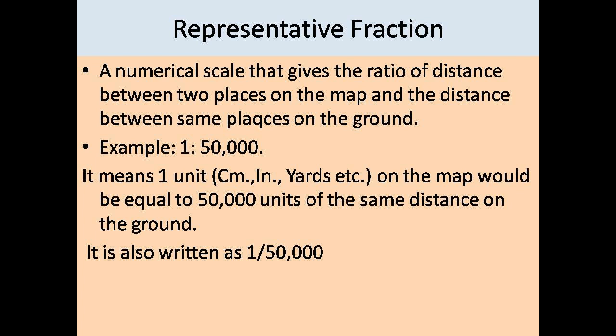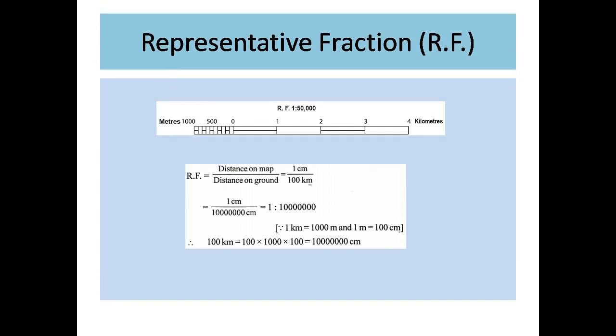The third way to represent map scale is representative fraction. This is a numerical scale giving the ratio of the distance between two places on the map to the actual distance on the ground. For example, 1 is to 50,000 means 1 unit on the map equals 50,000 units on the ground. The ratio is also given as a fraction — 1/50,000 — with the numerator representing 1 unit on the map and the denominator representing 50,000 units on the ground. You can see the formula: representative fraction = distance on map divided by distance on ground.